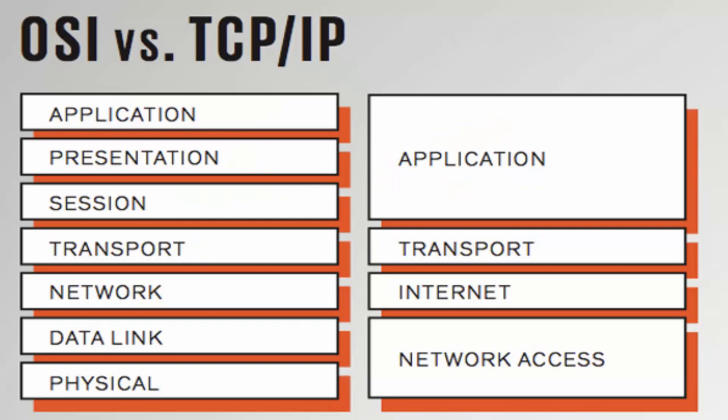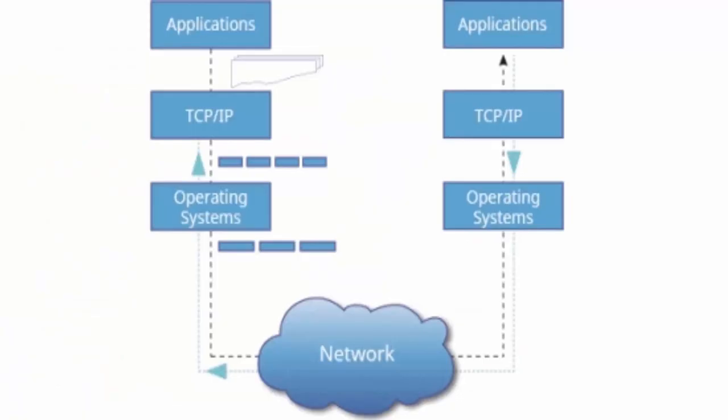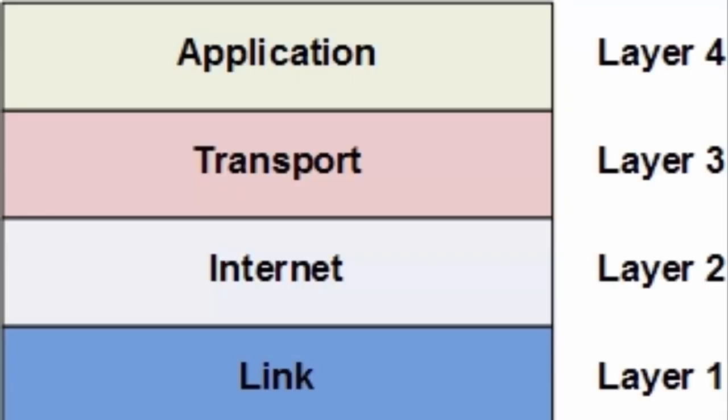Internet Protocol is a suite of communication protocols used to interconnect network devices on the internet. TCP/IP can also be used as a communications protocol in a private network. TCP/IP specifies how data is exchanged over the internet by providing end-to-end communications that identify how it should be broken into packets, addressed, transmitted, routed, and received at the destination.